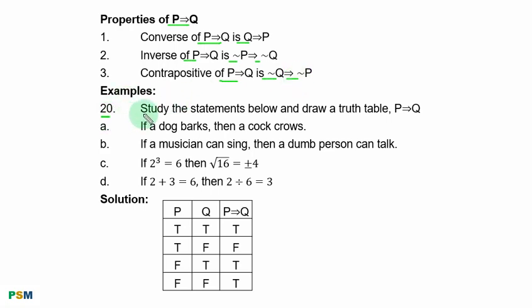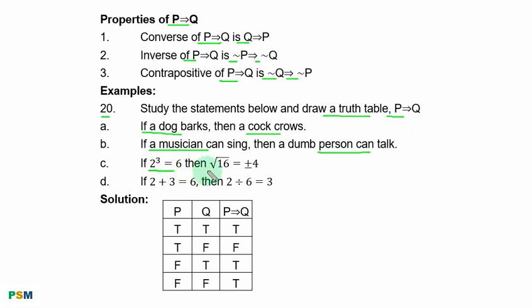Example 20: Study the statements below and draw a truth table for 'if P then Q'. A: If a dog barks, then a cock crows. B: If a musician can sing, then a dumb person can talk. C: If 2³ = 6, then √16 = ±4. D: If 2 + 3 = 6, then 2 ÷ 6 = 3.